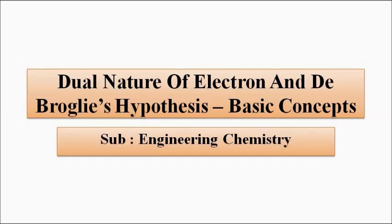Hello friends, welcome to Engineering Tutorial. We'll continue our discussion related to atomic structure. In the previous video we discussed Bohr's atomic theory and the concept of electronic configuration, atomic number, mass number, isotopes, and all that. In this video we are going to discuss some other important concepts related to the drawbacks of Bohr's theory — what were the errors, the problems with that approach, and how new ways of visualizing the atomic structure were put forth.